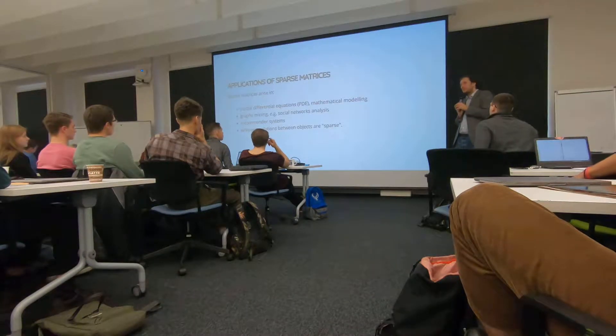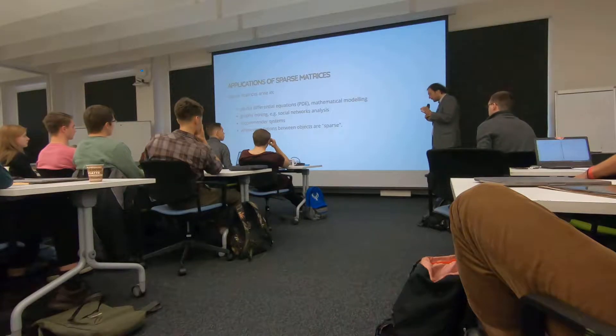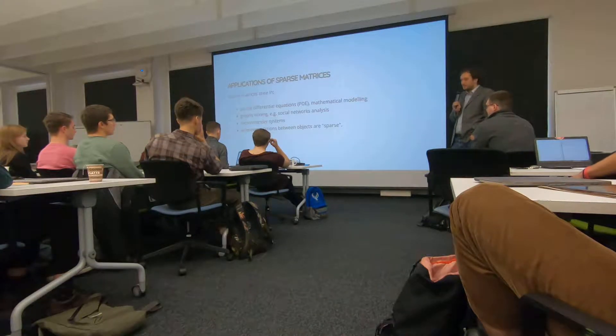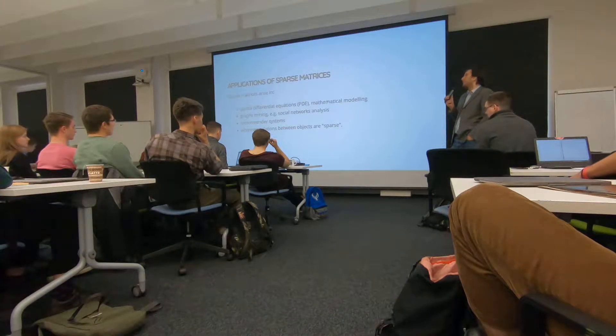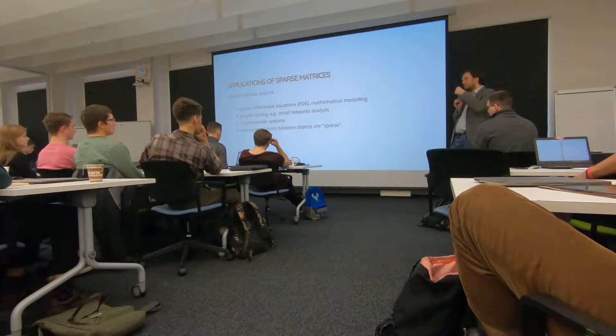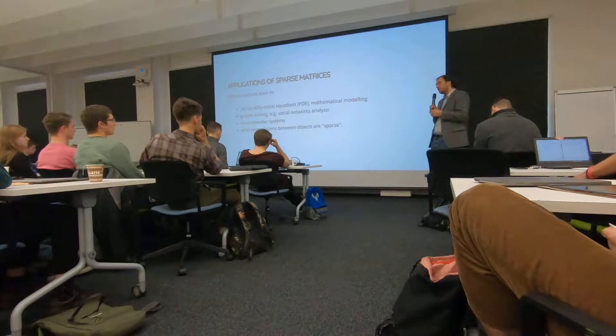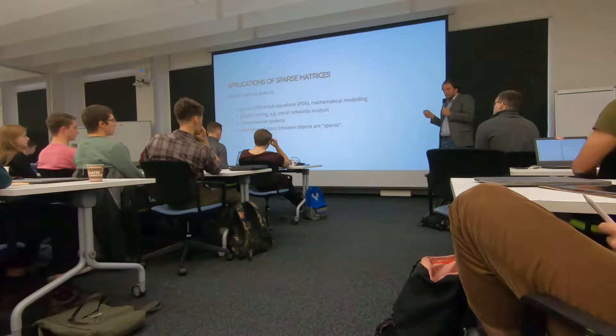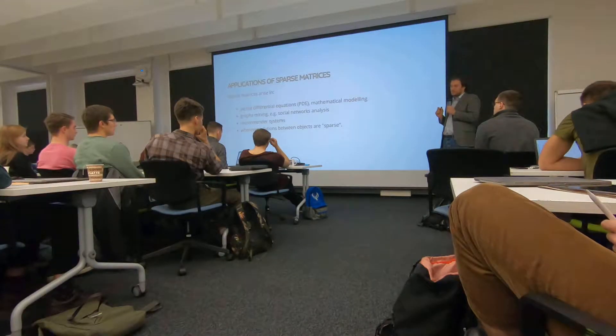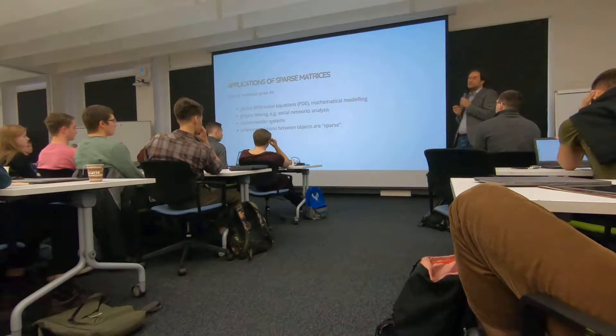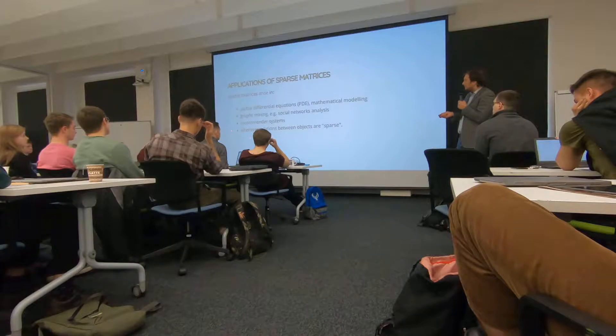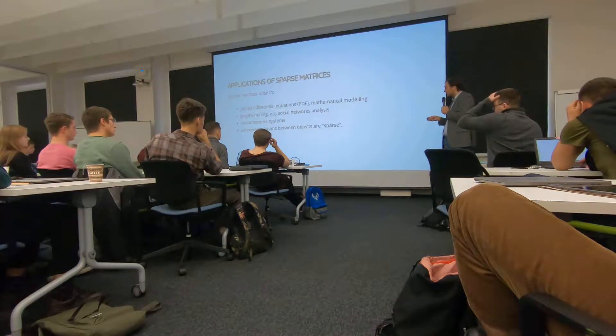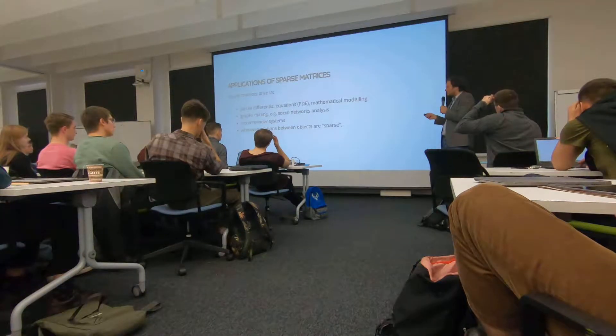There are also other types of problems with data analysis where you have local interaction. One really industrial-scale example is recommender systems. When you have users, you have products. Users buy some products or do some actions. This interaction between users and products is also a graph. One of the most efficient methods for working with recommender systems is computing the singular value decomposition or partial singular value decomposition of the large sparse matrix. These are all examples when you have objects and certain types of relations between objects. Not everyone is connected to everyone.